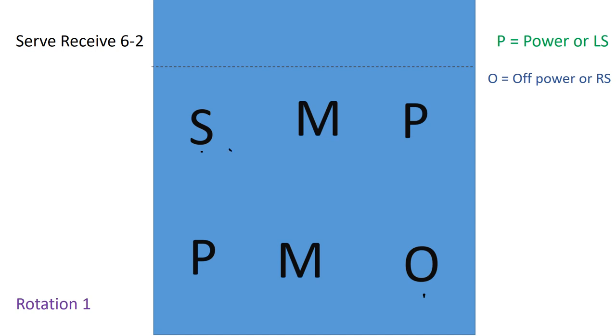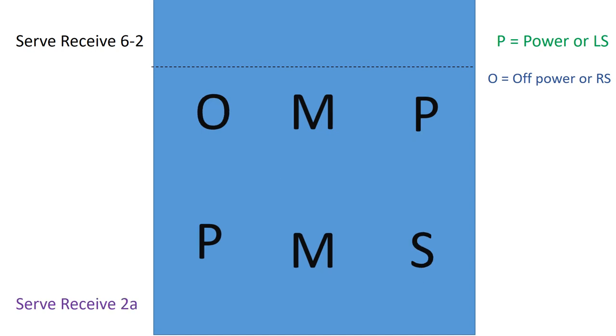They're not going to switch positions on the court, but they're going to be switching responsibilities, meaning that this person who was the setter goes to the front row. They now become the off power, and this off power now becomes the setter. So now we're ready to do our serve receive. You can see the two players have switched positions here.